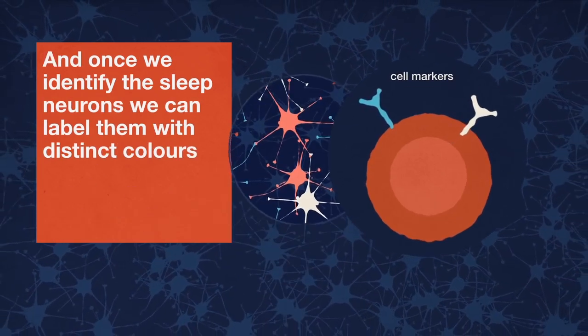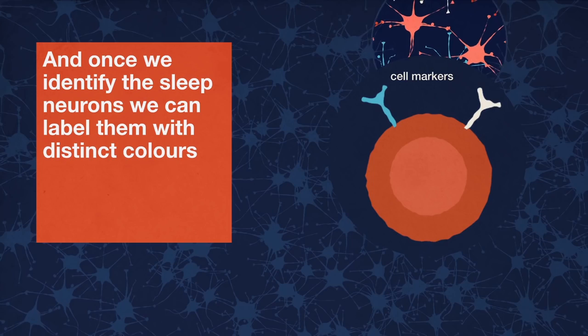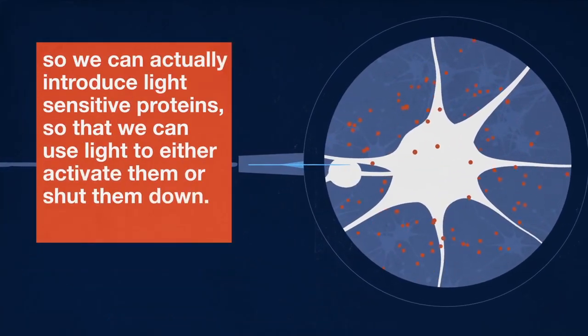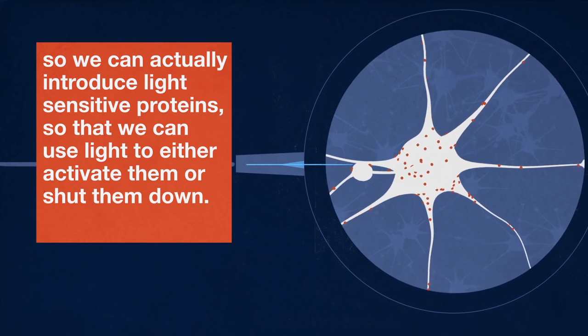And once we identify the sleep neurons, we can label them with distinct colors, so we can actually introduce light-sensitive proteins, so that we can use light to either activate them or shut them down.